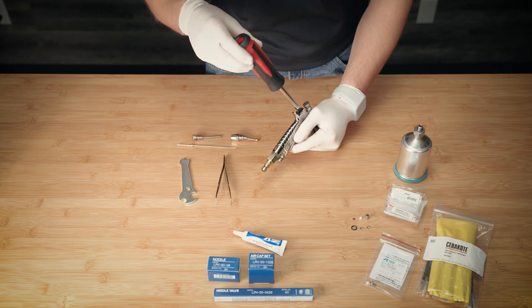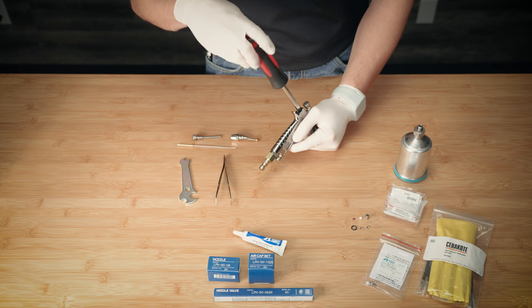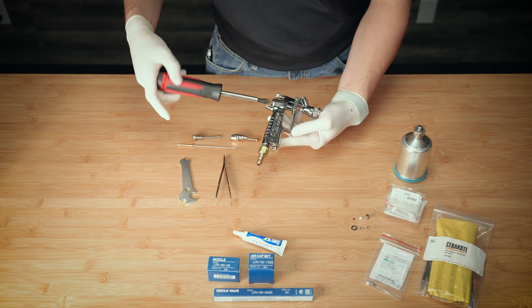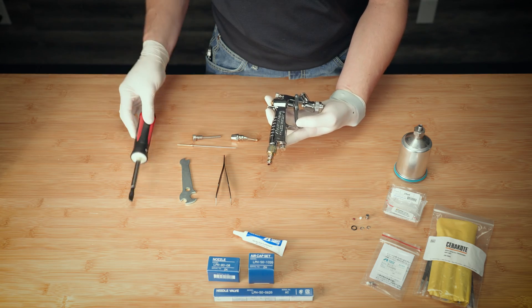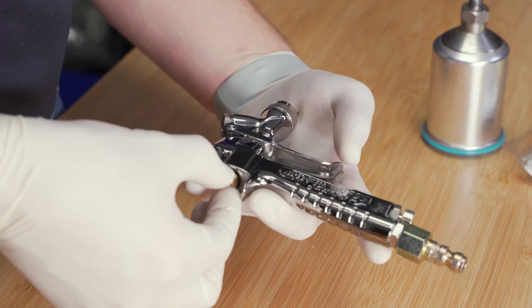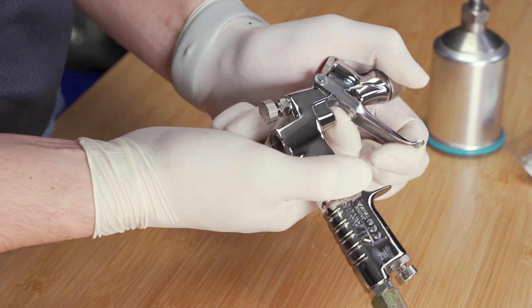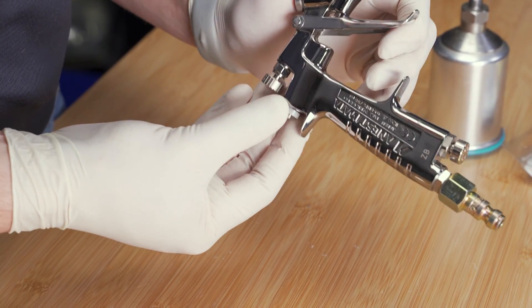With a flat blade screwdriver, remove the air valve retaining set screw. Push from the backside of the trigger to remove the air valve.